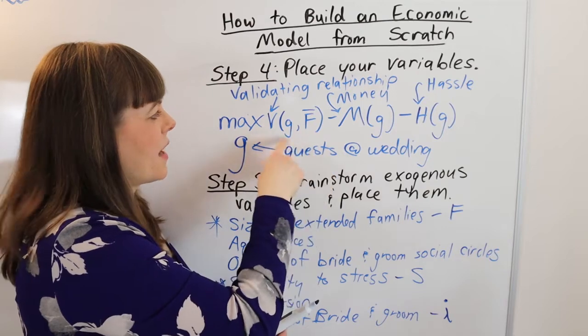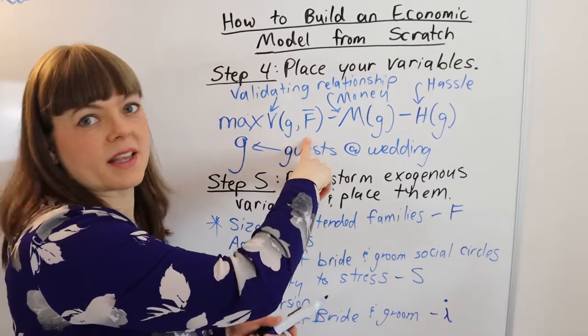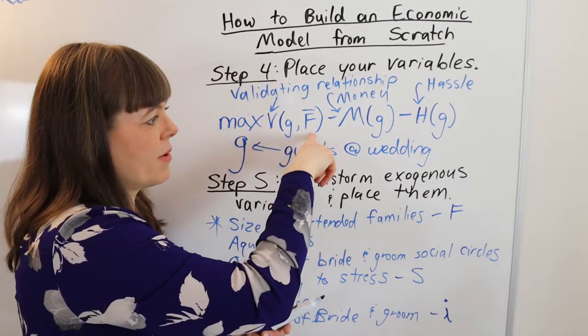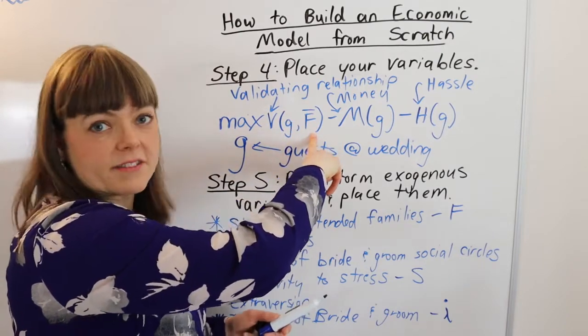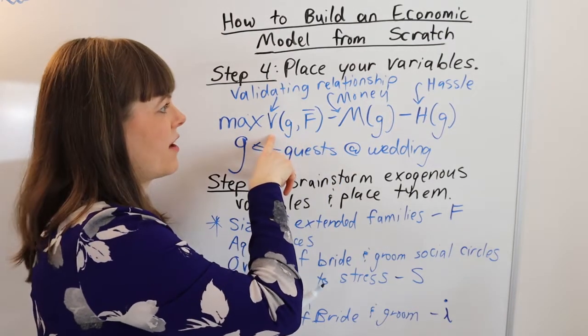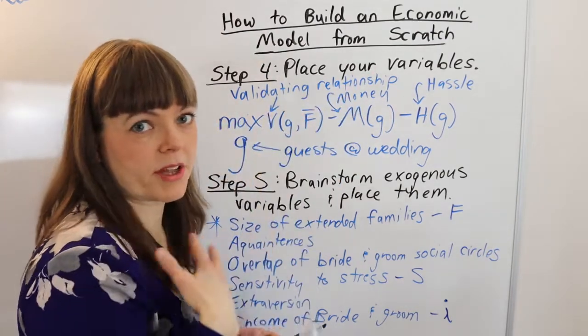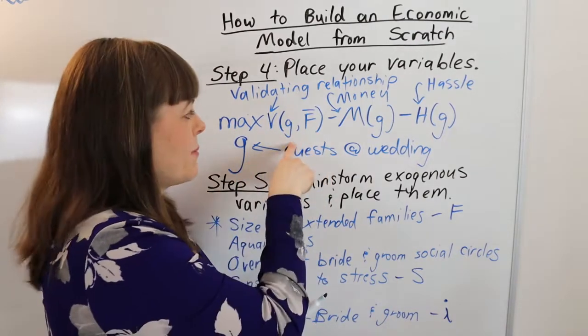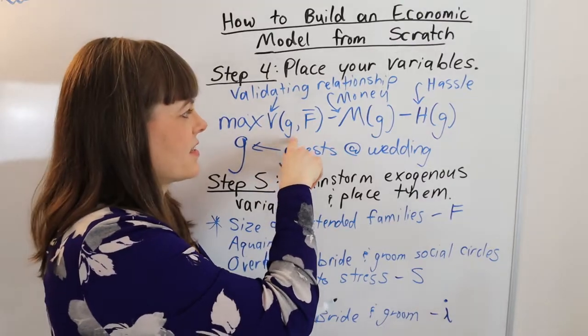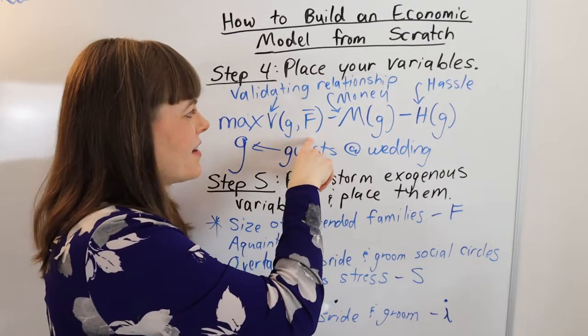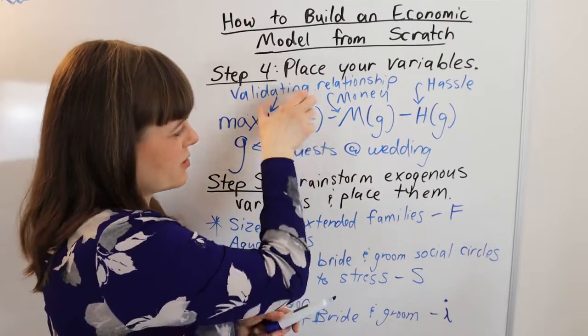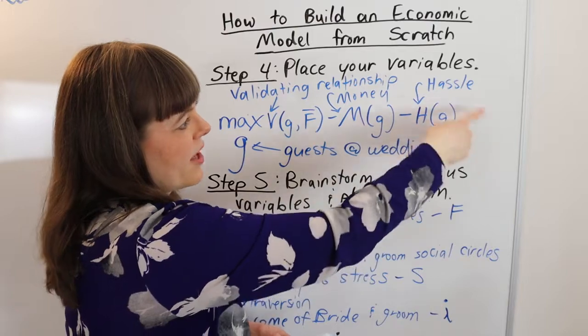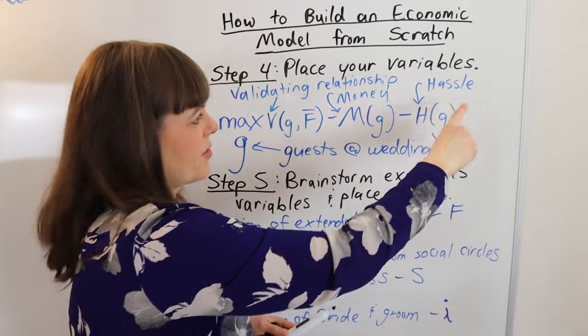And so what this means is there's a relationship between validating relationships and family size, meaning if I hold the number of guests constant, but I increase the size of my family, that's going to have an effect on the validation of people in my life. So obviously, increasing the size of the family means, oh, there's keeping the guest list size the same. There's a lot of people who are going to be upset and not going to feel validated. So I just placed that in there. Now sensitivity to stress obviously is going to belong in the hassle part of the cost. So let me put that in.